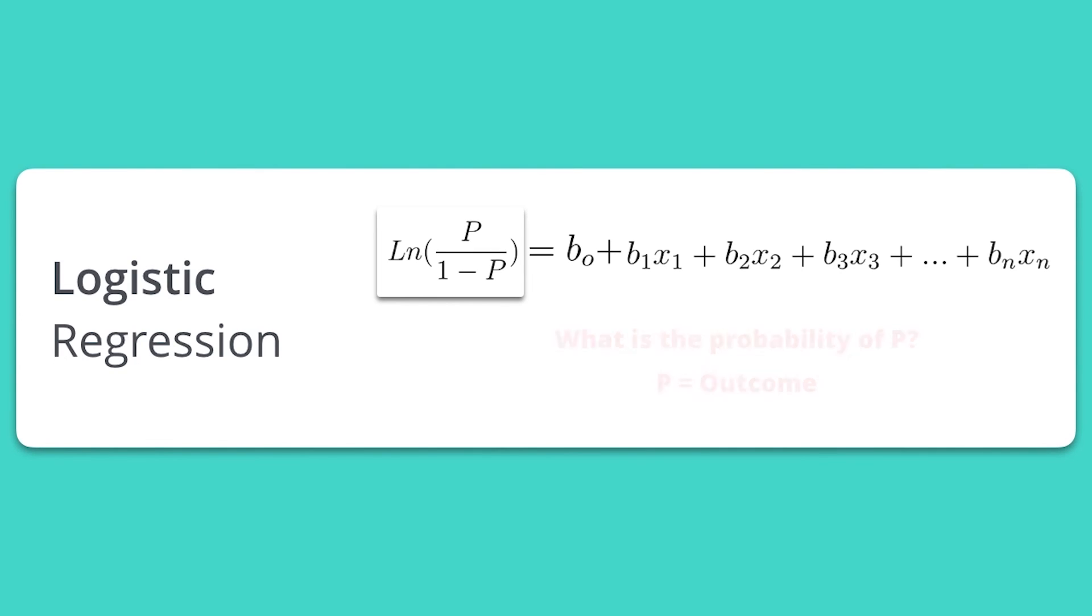What we are trying to do is find the probability of P, which represents an outcome. In our example, P represents the probability of yes, they will redeem. The natural log is also in this equation to deal with the binary nature of this problem.